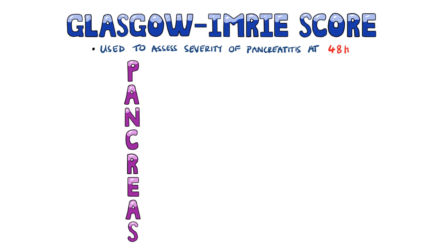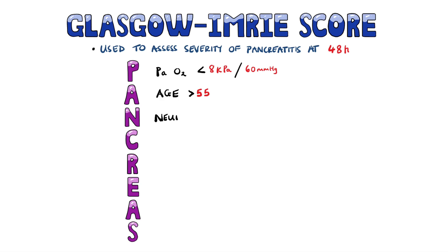It can be remembered with a mnemonic: PANCREAS. The P stands for a PaO2 level below 8 kilopascals, or 60 millimetres of mercury. The A stands for an age above 55 years old. N is for neutrophils, or the white blood cell count, above 15 times 10 to the 9 per litre.